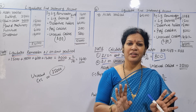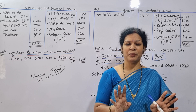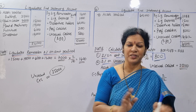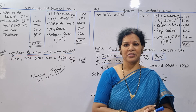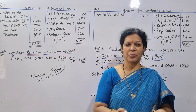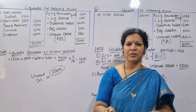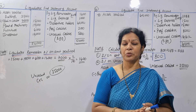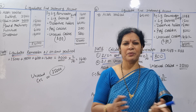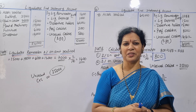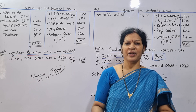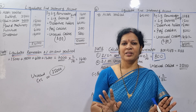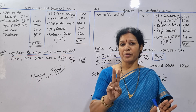In general, we have a count of liquidate remuneration. That is the main twist. We have to make a liquidator remuneration and a short problem with a liquidate remuneration calculation. Simple. We have two problems today.